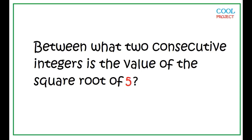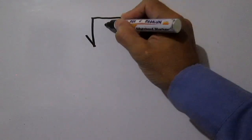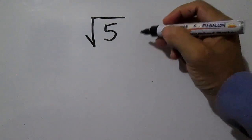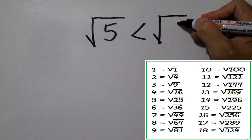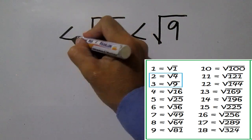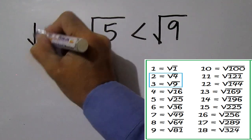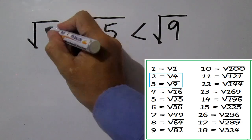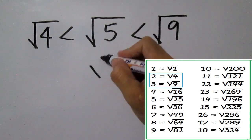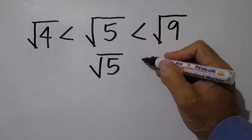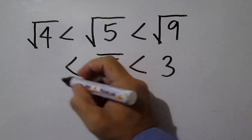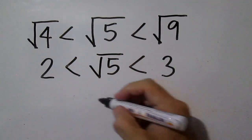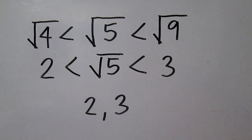Between what two consecutive integers is the value of the square root of 5? Square root of 5 is less than square root of 9 and greater than square root of 4. Square root of 9 is 3 and square root of 4 is 2. So square root of 5 is between integers 2 and 3.